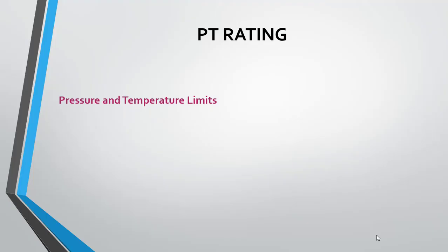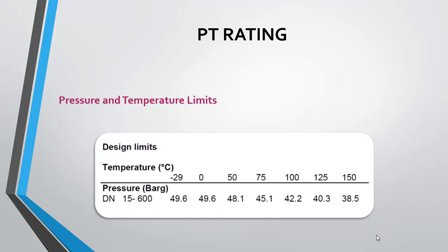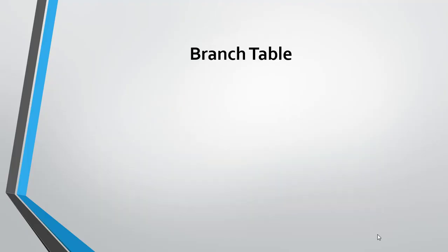The first area is PT rating. PT rating is nothing but pressure and temperature limits. This indicates the maximum and minimum temperature of the piping class, and the maximum and minimum pressure of the piping class for which it can be used.